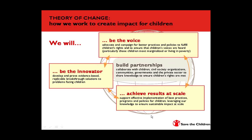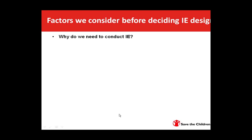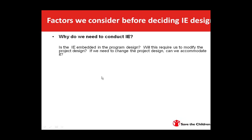What role does impact evaluation play in our theory of change? It would help us determine whether a given innovative approach works and how it works. For policy interventions, it would help us test whether our advocacy is making a difference — are policies put in place, and are they being implemented? The first factor we consider before determining an impact evaluation is: why do we need to conduct it, and what element of our theory of change are we evaluating? Is impact evaluation embedded in the program design, or will this require us to modify the project design? We look at these questions before deciding because it entails a lot of processes to make the adjustments necessary to conduct the impact evaluation.